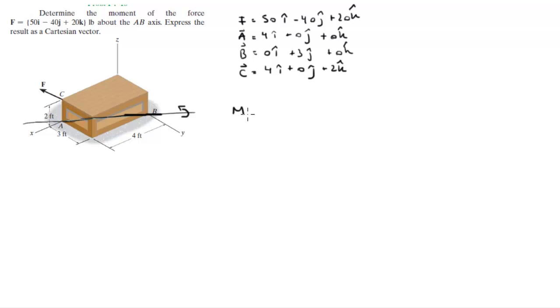So the moment about the axis AB that F creates is given by a unit vector in the A and B direction. Remember, this is not the x, y, or z, therefore you don't start your vector from the origin. This is the A and B, so what you've got to do is find the shortest distance between the axis and where the force acts.